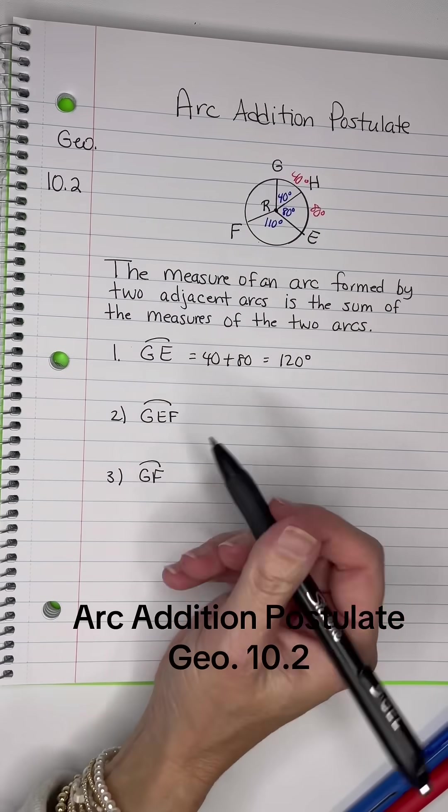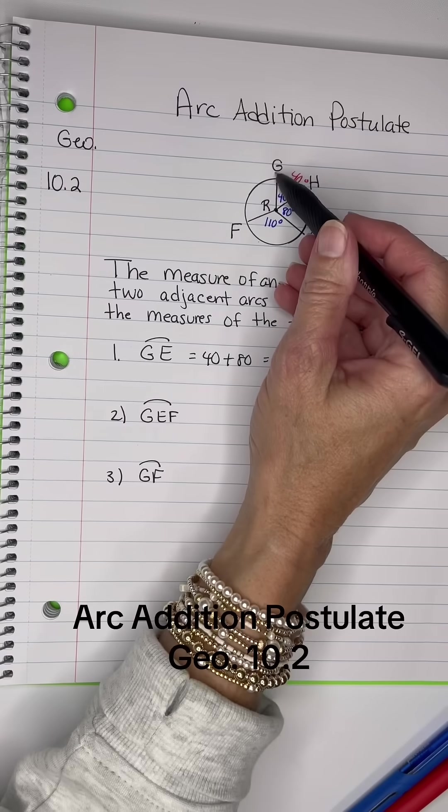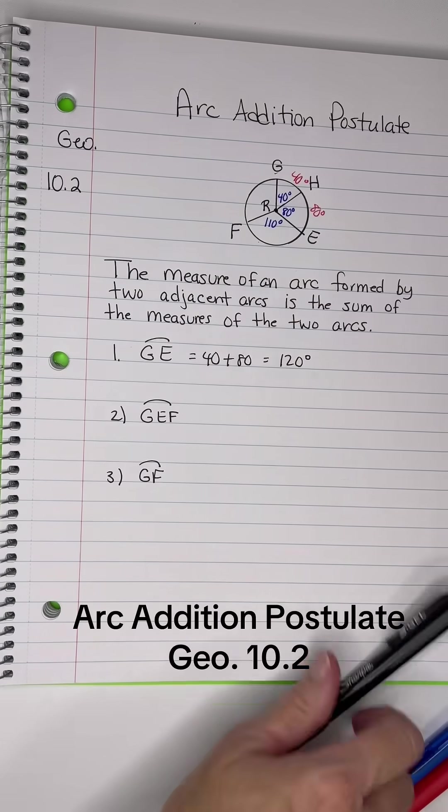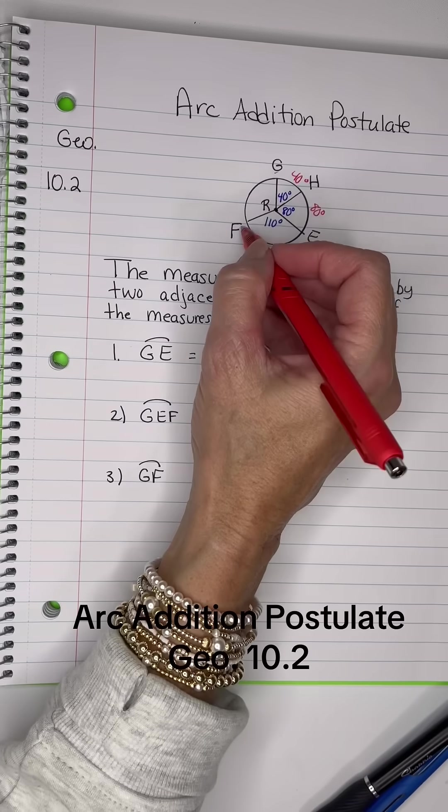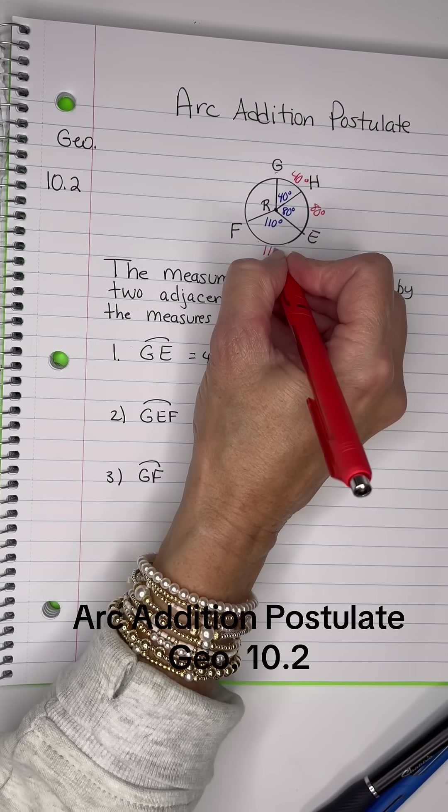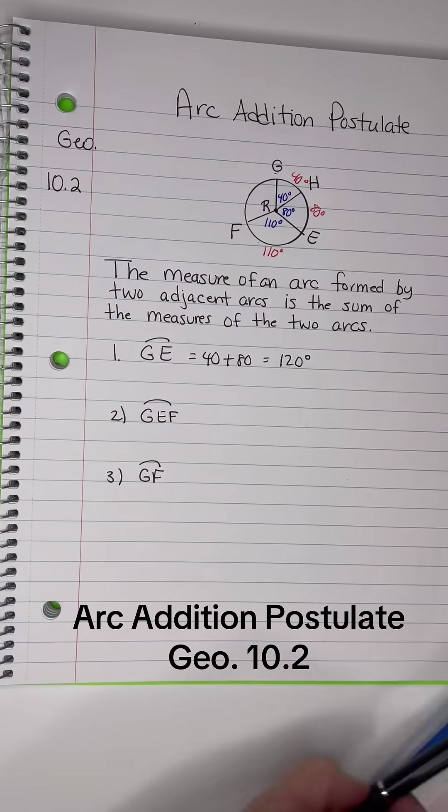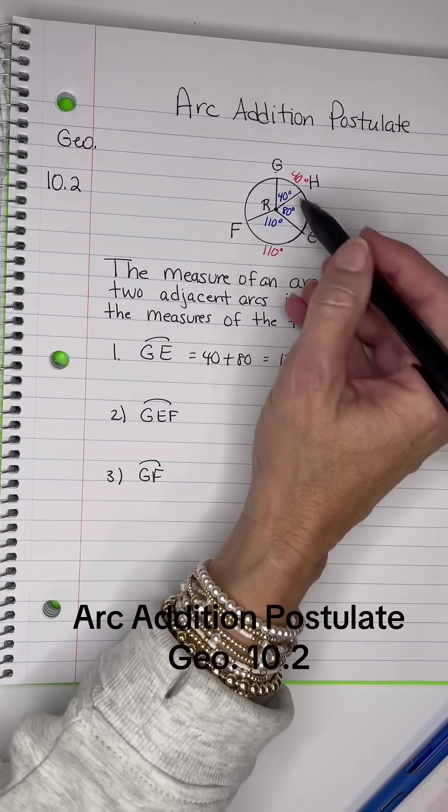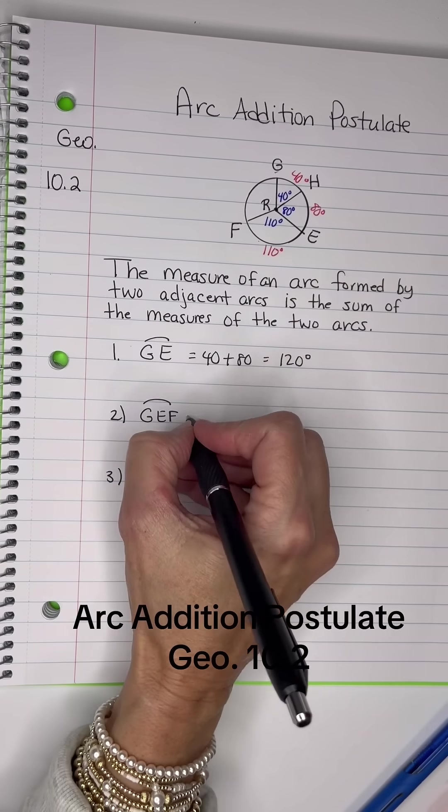All right, now for GEF. GE goes all the way to E and then to F. If this central angle here is 110, then basically I'm taking the GE that I had, which was 120, and I'm adding the 110 to it.